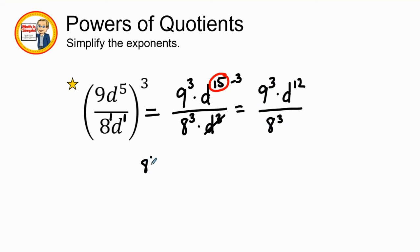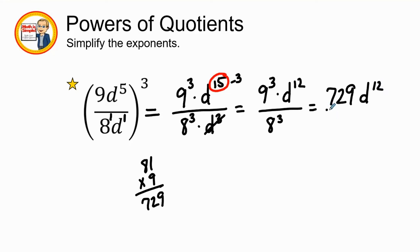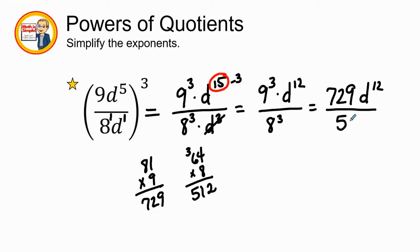Our largest exponent is 15, which stays on top, so we subtract three from 15, leaving us with nine to the third power times d to the 12th power, all over eight to the third power. Simplifying: nine times nine is 81, times nine is 729. Eight times eight is 64, and 64 times eight is 512. Our final answer is 729d to the 12th over 512.